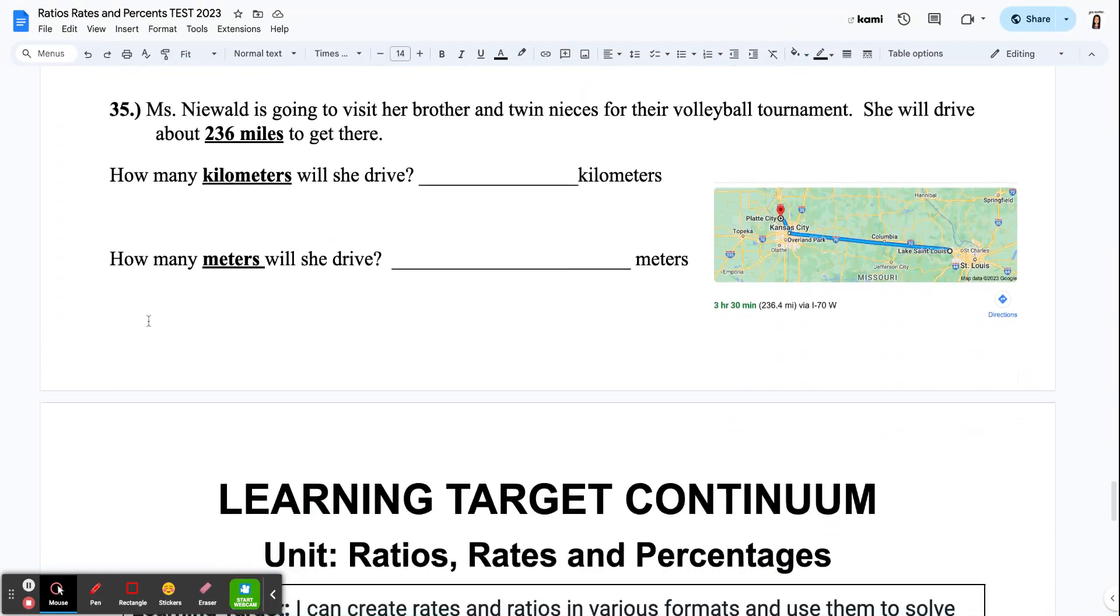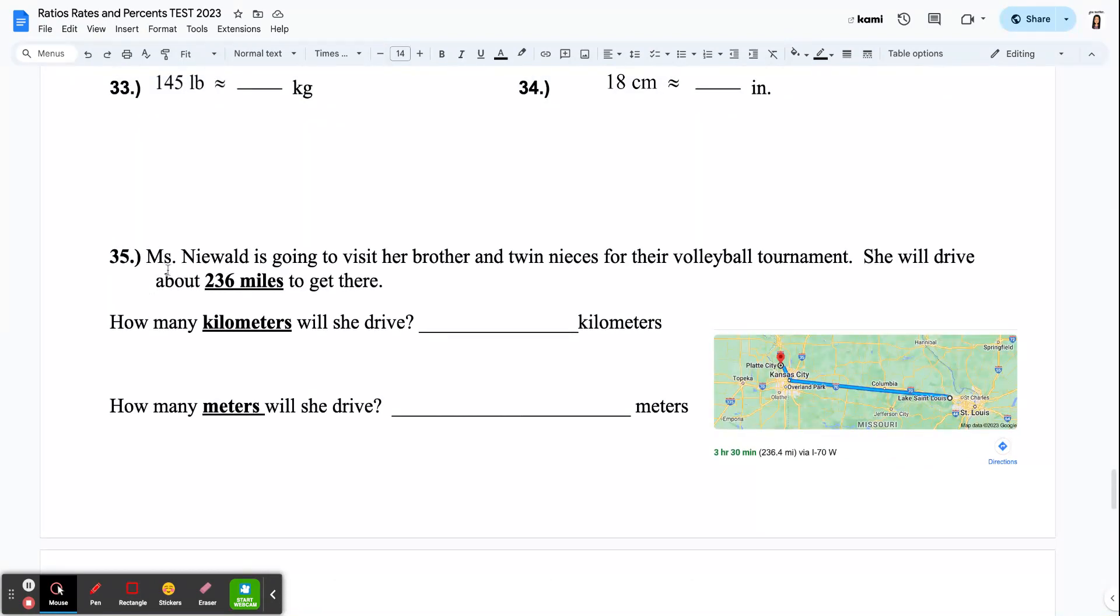And then the last question of the entire test, congratulations, is a word problem. I just thought I would try to throw my real life into this mixture. So Ms. Newell is going to visit her brother and twin nieces for their volleyball tournament. She will drive about 236 miles to get there. So I even gave you, like, whenever a GPS to get from my house in Lake St. Louis to Platte City, Missouri, which is Kansas City, Missouri area. This is where I grew up. It takes me three hours, 30 minutes to get there, and it'll tell me roughly how many miles it will take me as long as I don't detour. So that's where I got the 236.